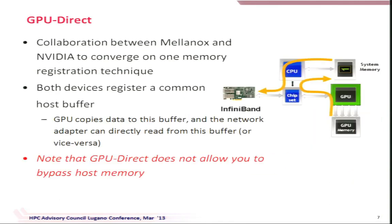GPU Direct came into the picture as a collaboration between Mellanox and NVIDIA to converge on a unified memory registration technique. You can register the same space for both the GPU device and InfiniBand, avoiding one copy. So now you just copy from GPU memory to system memory, and then the network takes it. However, there was a misconception — people thought GPU Direct solved everything, but it doesn't allow you to bypass host memory. That's what the newer GPU Direct RDMA does. Most current-generation InfiniBand-GPU systems actually work in this GPU Direct mode.